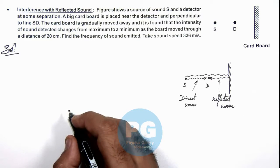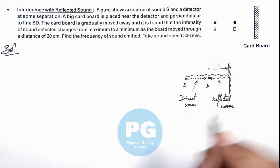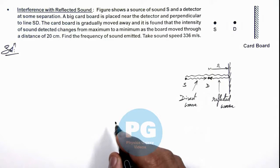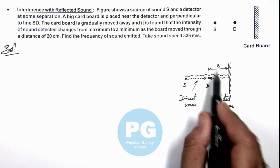If this cardboard is located at some distance r from the detector, then we can directly say the path difference between the two waves received at detector would be 2r.